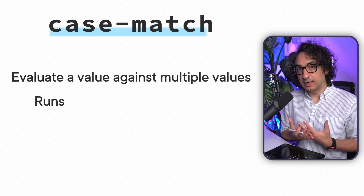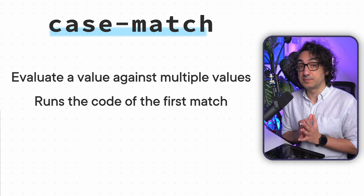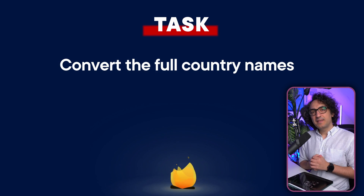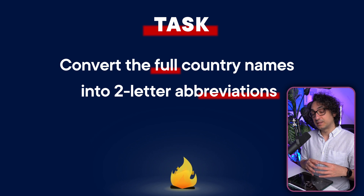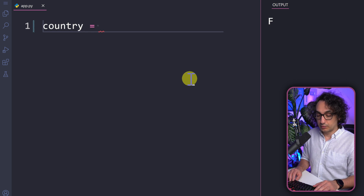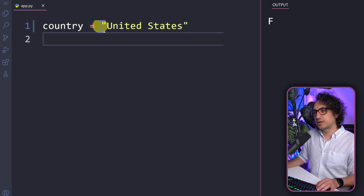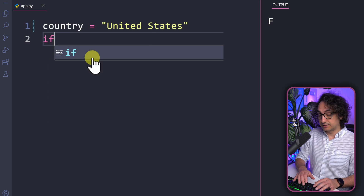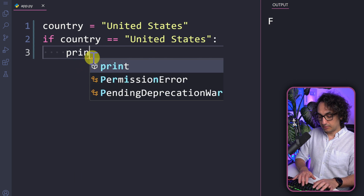Now let's talk about the second special type of conditional statements, which is really new in Python — we call it the match-case. It's about evaluating an expression or a value against multiple possible values, and Python will execute the block of code for the first match. Let's understand what this means and why we have it. Say we have the task: convert the long name of countries into two-letter abbreviations — converting the long form into the short form.